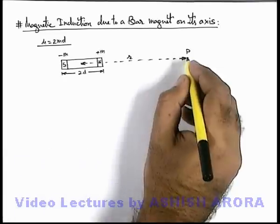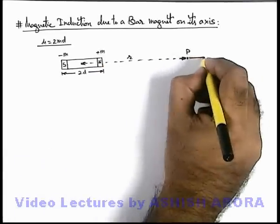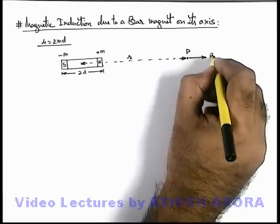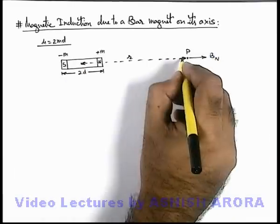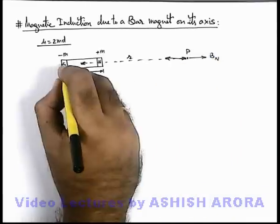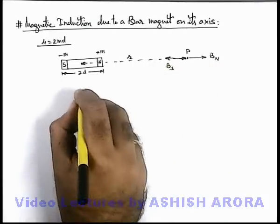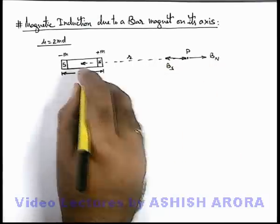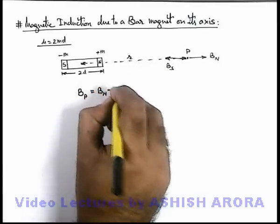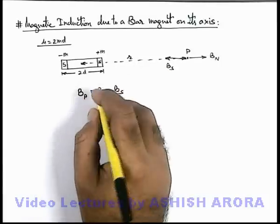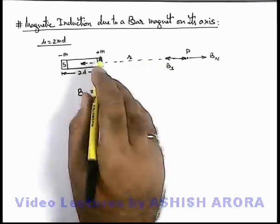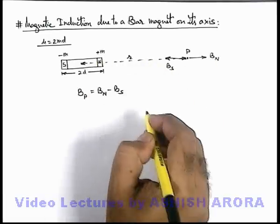At point P, due to the north pole we know that magnetic induction will be away from it, that is B_N, and due to the south pole it will be directed towards the pole, that'll be B_S. So the magnetic induction at point P due to the magnet can be written as B_N minus B_S, because as the north pole is closer, the magnitude B_N will be more than that of B_S.